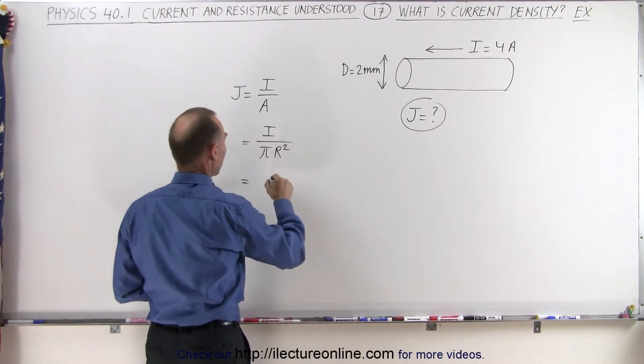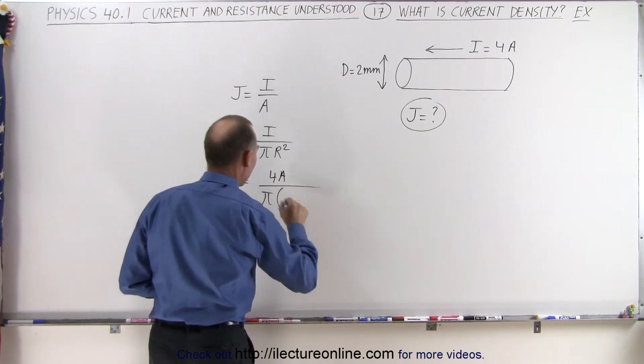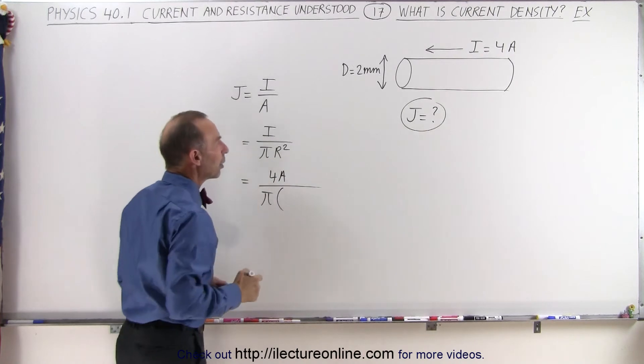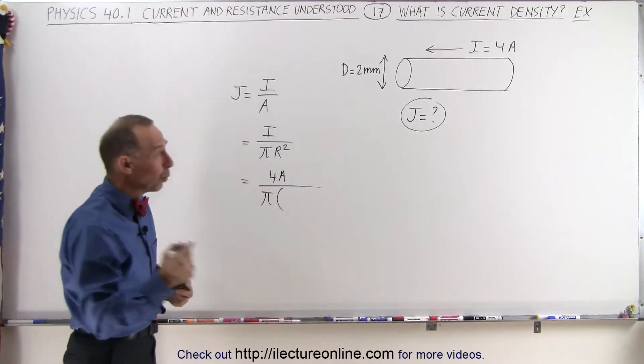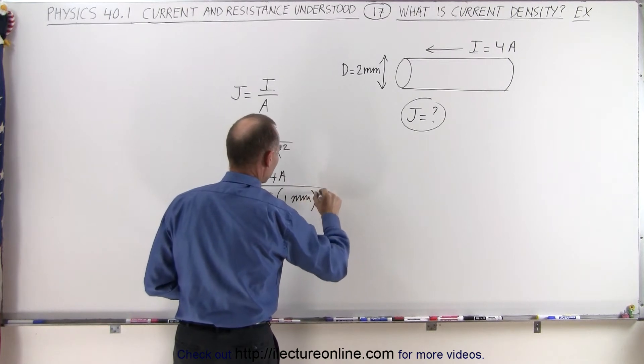So in this case, that would be 4 amps divided by pi times r. Now r would be half the diameter, that would be one millimeter, and we square that.